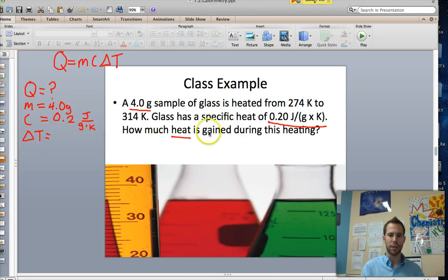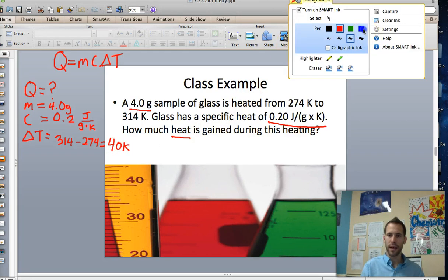And this is equal to the final temperature, 314 Kelvin minus the initial temperature, which is 274 Kelvin. So when I do that math, I'm going to get 40 Kelvin total. And all I have to do is plug those numbers in to their assigned variables.